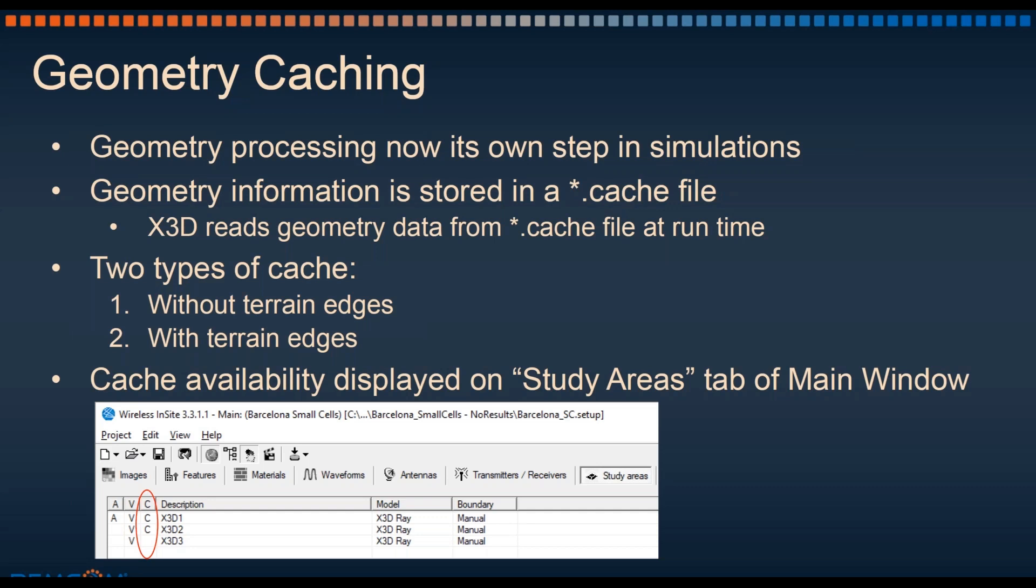There are two main types of geometry cache. There is one that does contain terrain edges, and there's one that does not contain terrain edges. This is essentially determined by whether or not terrain diffraction is enabled in the study area properties. The availability of the geometry cache is displayed on the study areas tab of the main window, seen circled here in red on the image. A C indicates that the cache has been generated and is ready to use. If it is blank, it is not there, and the cache will need to be generated at the beginning of the simulation.